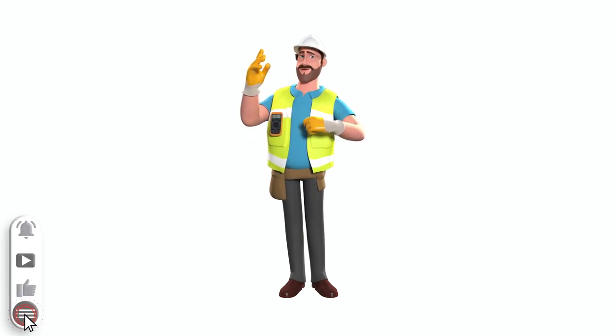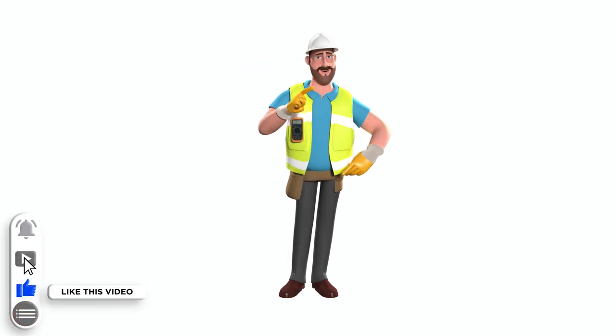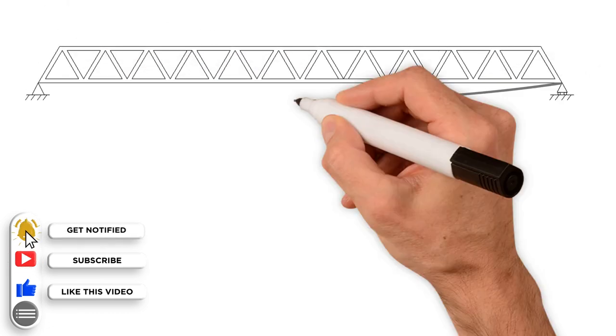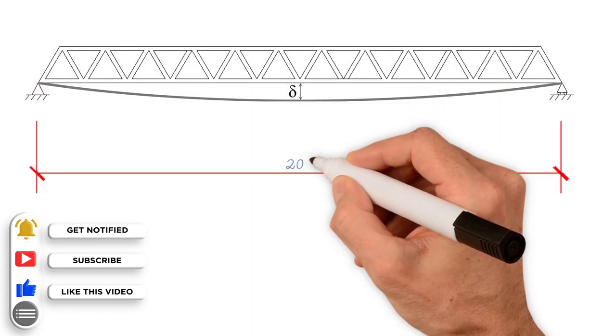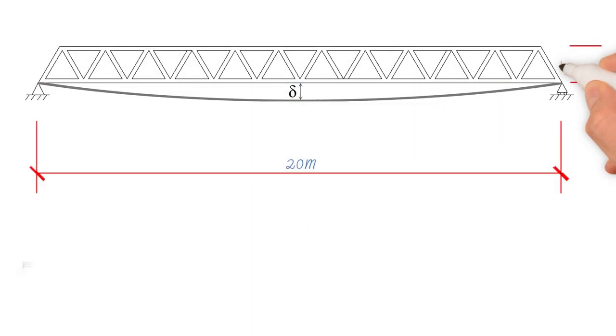Welcome back to the channel. In today's video, we'll look at how to calculate the approximate mid-span deflection of a 20 meters long steel truss with a 1.5 meters depth that is subjected to a concentrated load of 200 kN in the center.